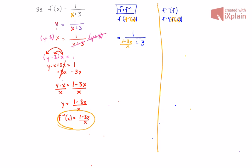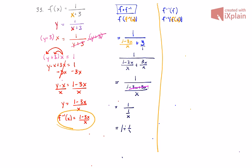We now have 1 over [(1 minus 3x)/x plus 3]. Giving the 3 a common denominator of x makes it 3x/x. Combining, the denominator becomes (1 minus 3x plus 3x) over x. The negative 3x and 3x cancel, leaving 1 over (1/x). This complex fraction is 1 divided by 1/x — we flip and multiply, giving us x. That's the identity function, y equals x. So this checks out.